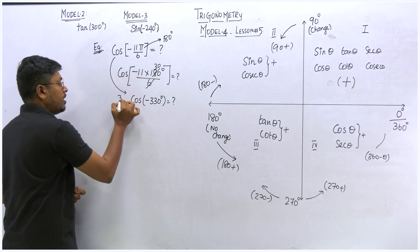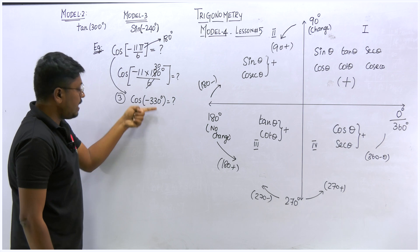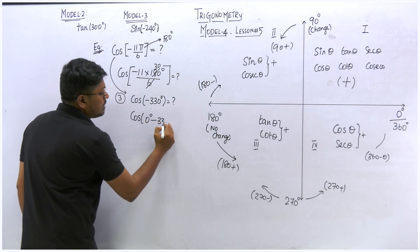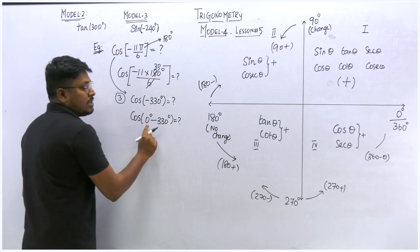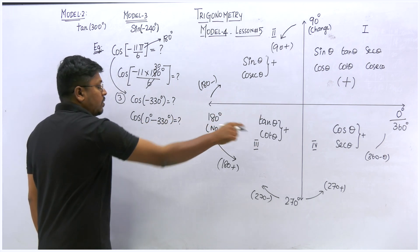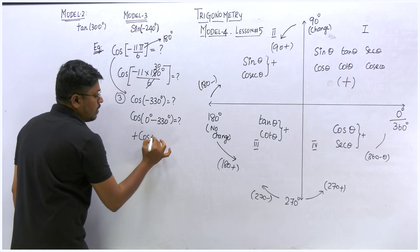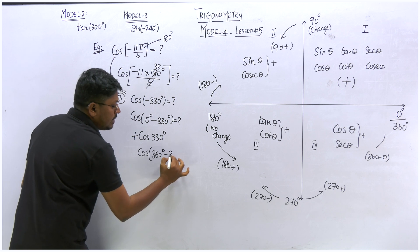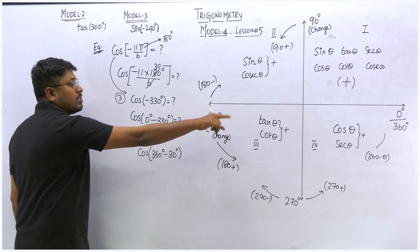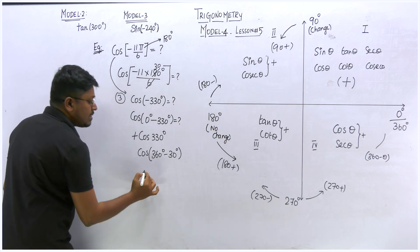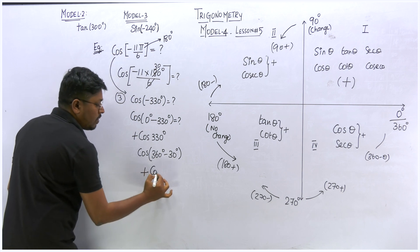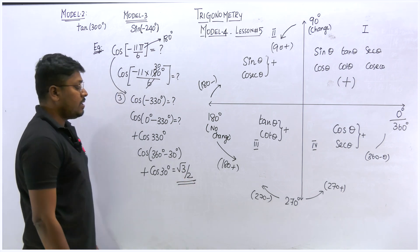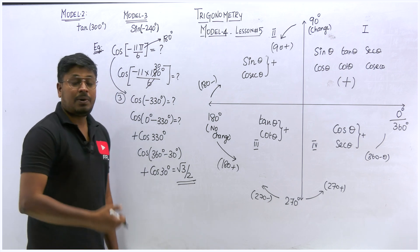We have converted the model 4 question into a model 3 question. Write it as cos of (0 minus 330), which lies on the fourth quadrant — in the fourth quadrant cos is positive, giving positive cos of 330. Rewrite 330 as 360 minus 30: the fourth quadrant again means cos stays positive and does not change. So cos of 30 equals root 3 by 2, which is the answer.